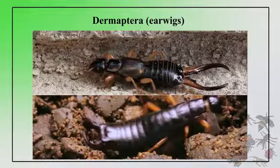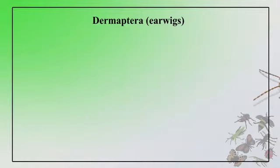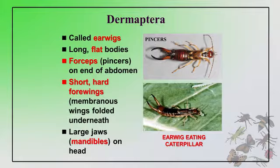Then comes Dermaptera. These insects undergo simple metamorphosis; mouth parts are the chewing type. They have short, hardened outer wings and folded membranous inner wings. A characteristic feature is the pincer- and forcep-like structure on the end of the abdomen, short hard forewings, and large jaws on the head.